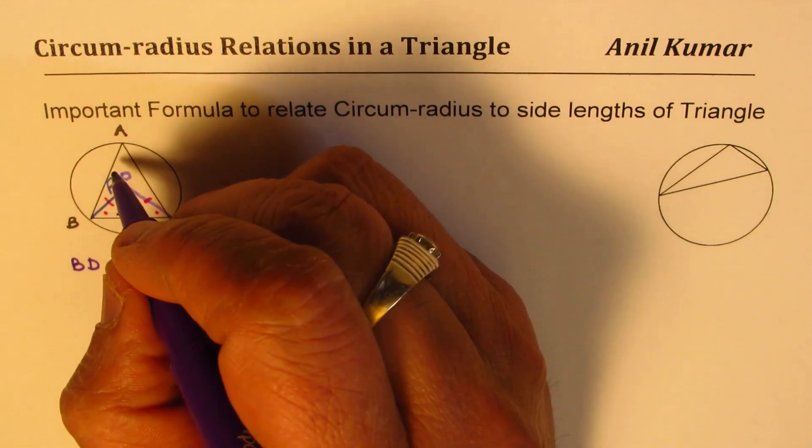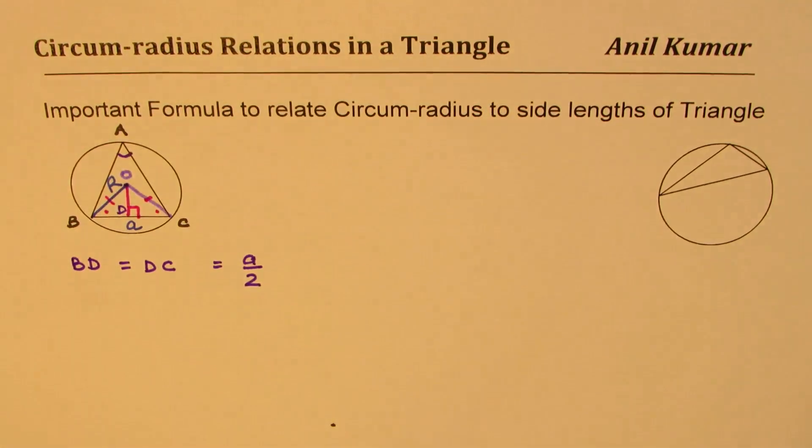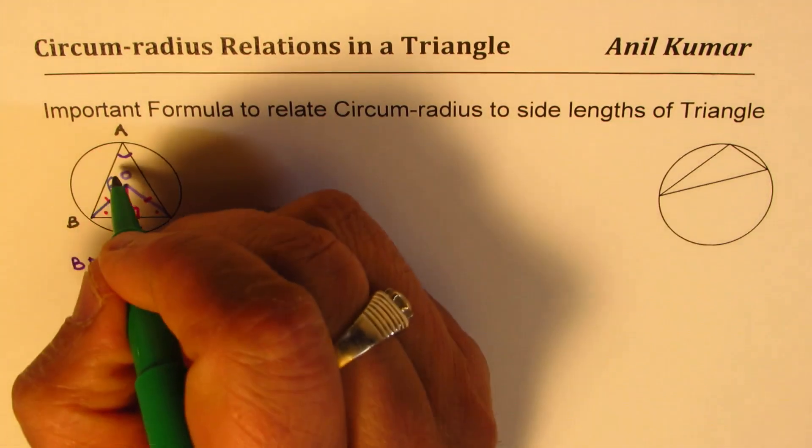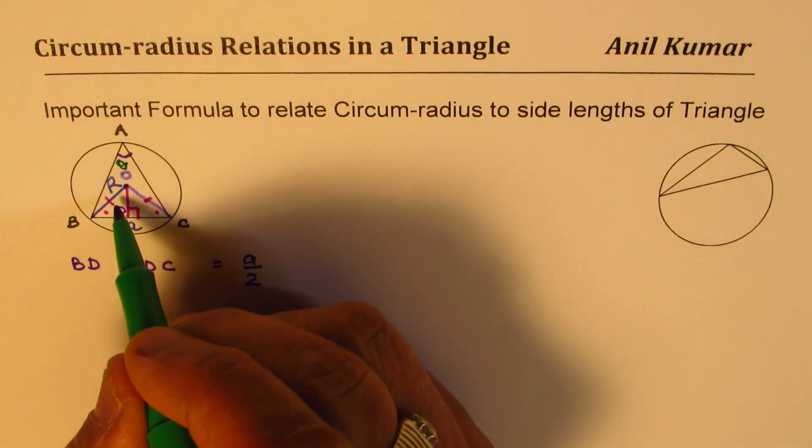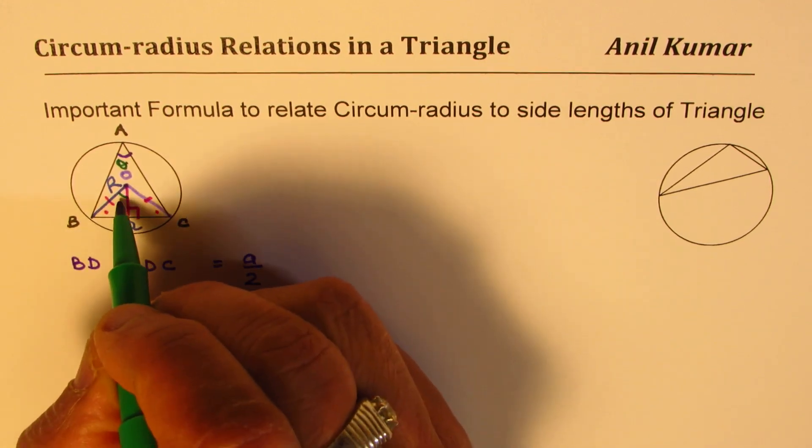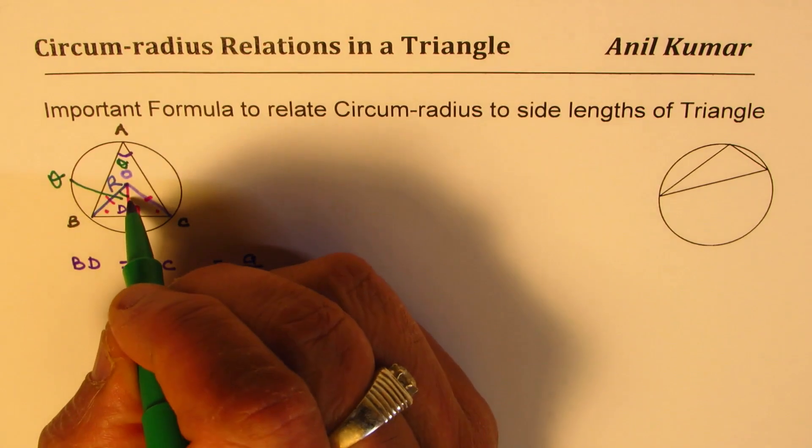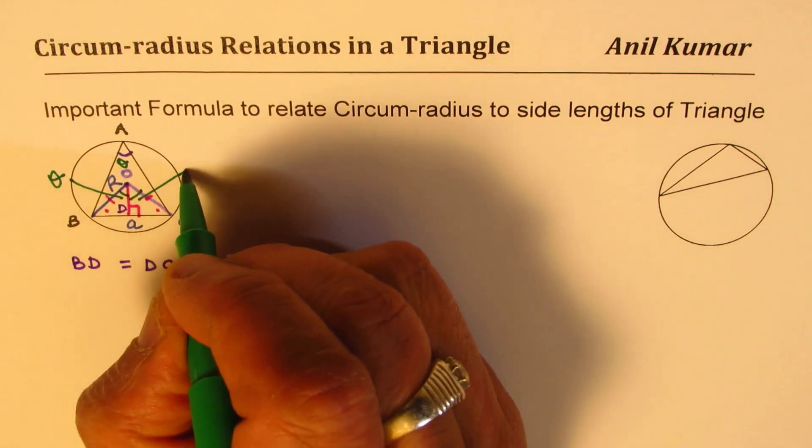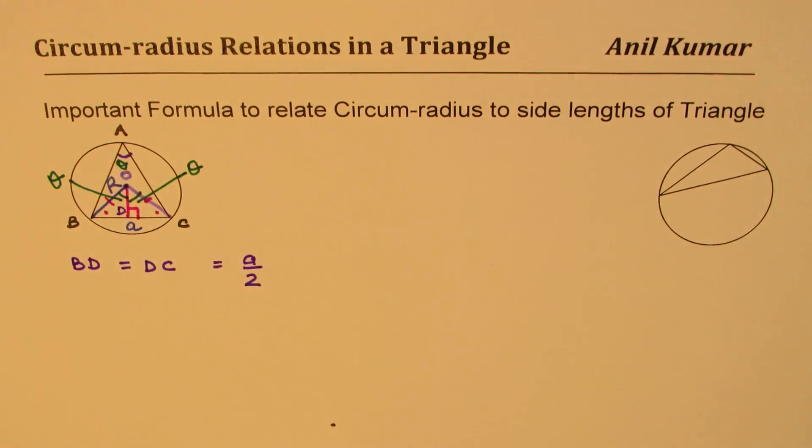Let's say the angle here is theta. If this angle is theta, the total angle at the center will be 2 theta. So the smaller angle will be also theta. These two will also be theta each, because the center angle will be twice that angle.